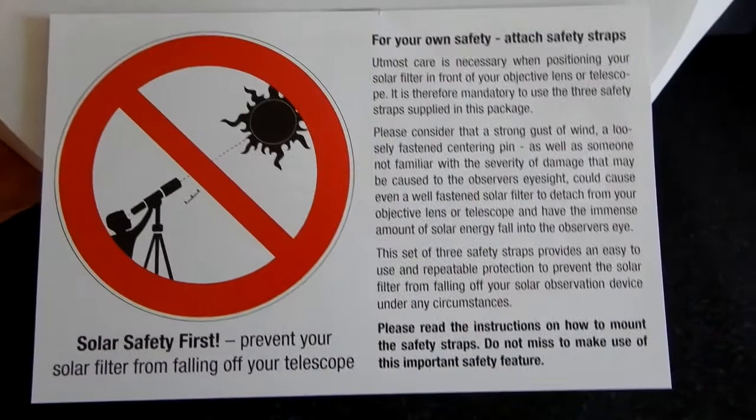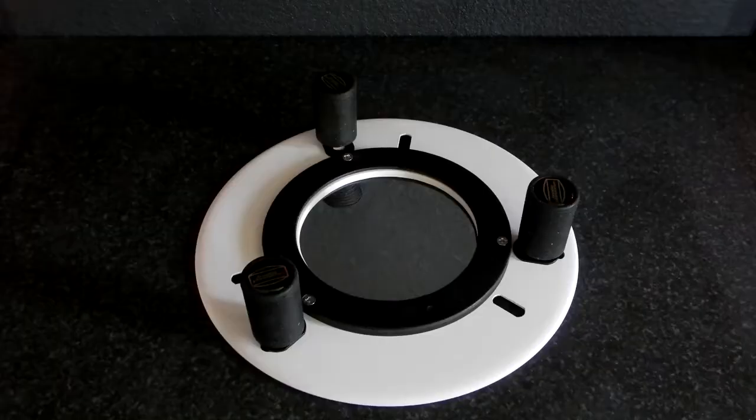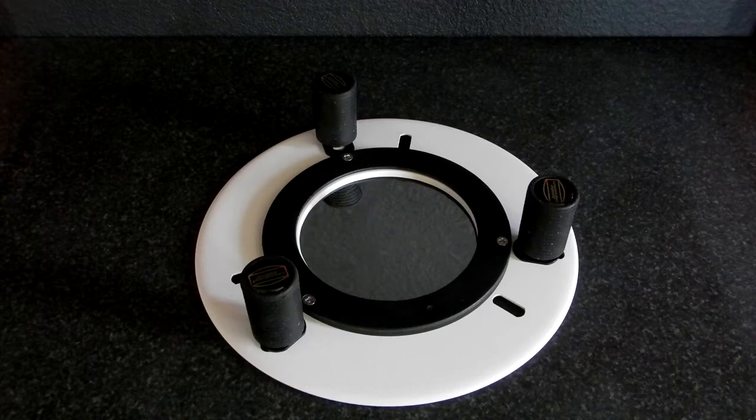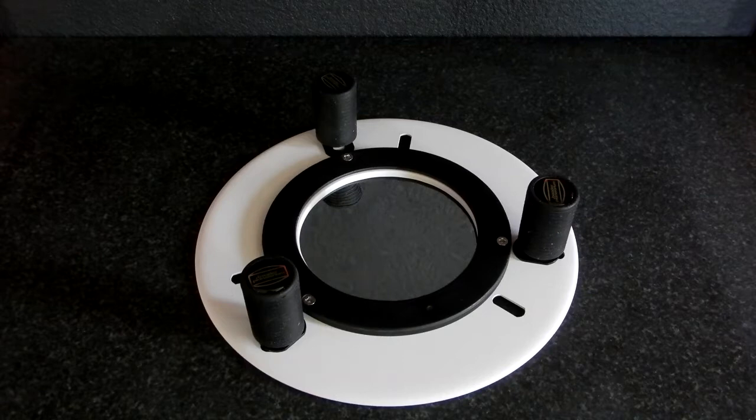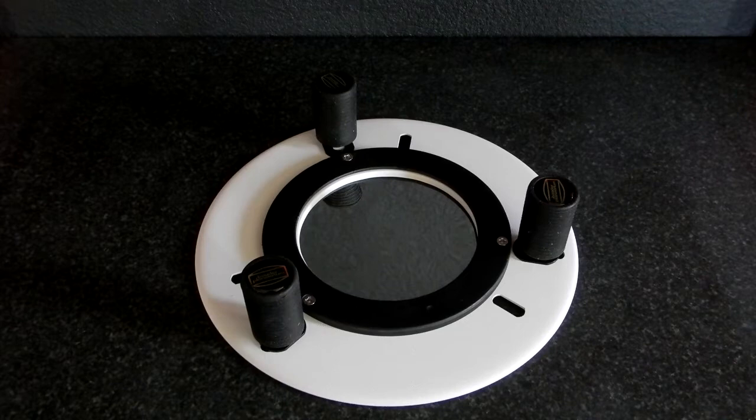On that clamshell that the filter was protected in, it's got this in German and then on the other side in English. You can pause the video if you want to read this. One thing I found quite interesting about this series, the ASTF, is that the solar filters are held within a temperature compensated cell. Astro solar film must not be put under stress either during mounting of the film or during any temperature change.